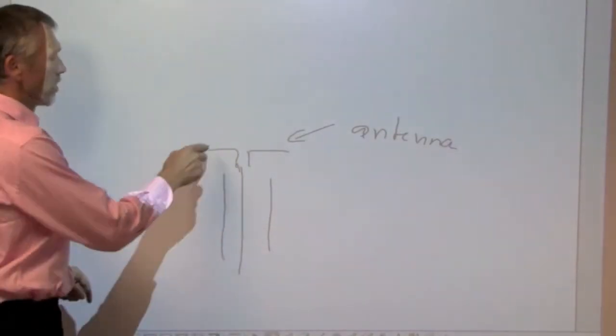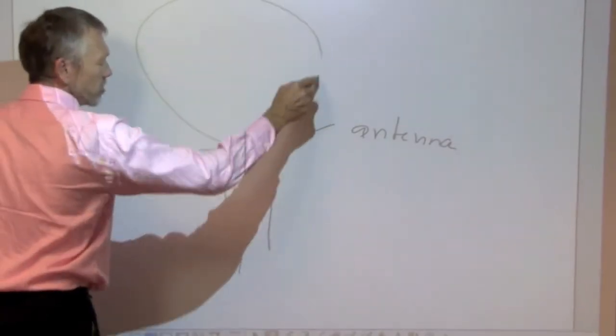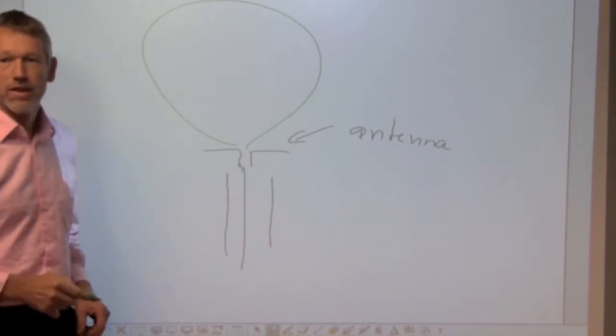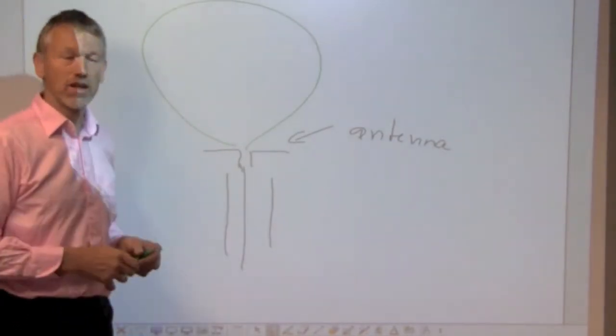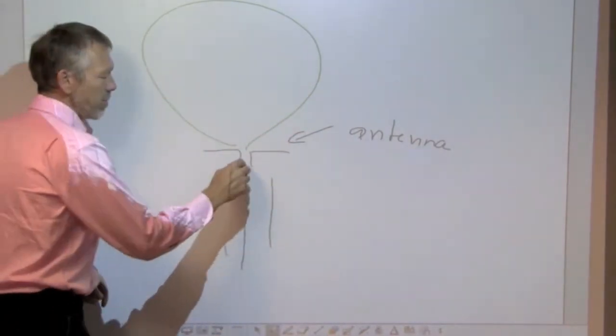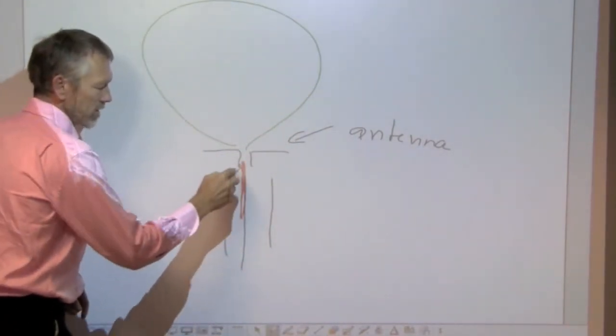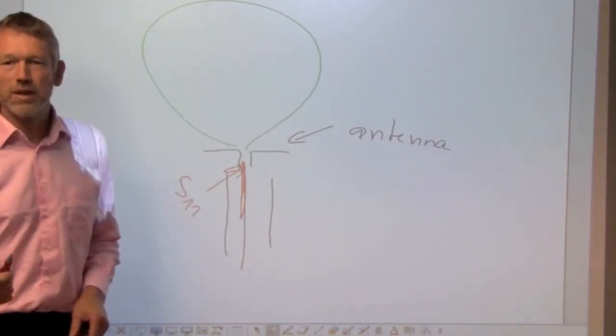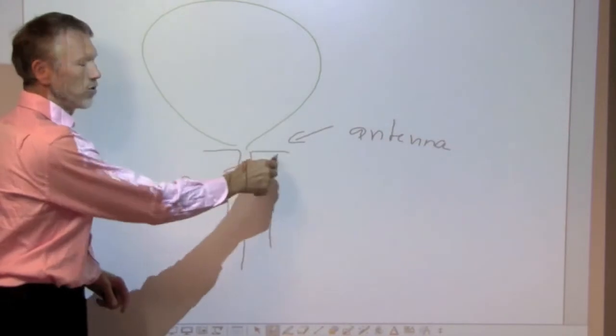One part is what we call the antenna diagram, which simply means how is an antenna radiating? Into which direction is the energy going out? The second part, which is equally important, is basically the matching, I would call it the input impedance, the matching of the cable towards the antenna.